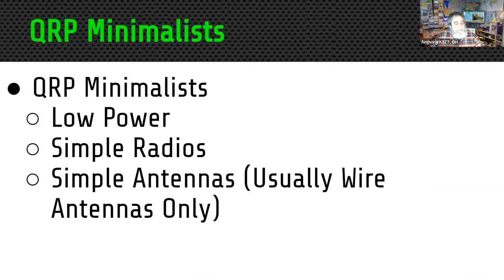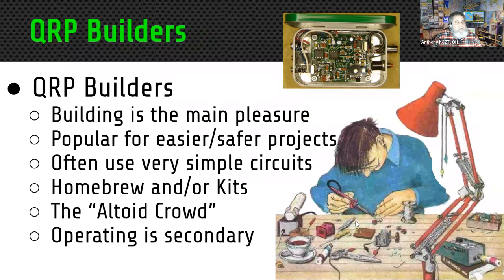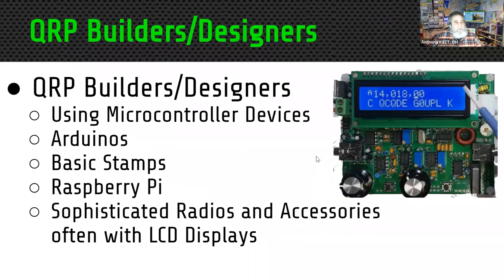QRP minimalists want low power, very simple radios, and very simple antennas. There was an article in early 80s QRP journals about the 'one-incher' — a radio built on a one-inch circuit board with one transistor output. Then there are the builders, whose main pleasure is building — they actually enjoy building more than operating. With QRP it's much easier and safer to build transmitters without high voltage. Many builders enjoy assembling kits; some build in Altoid mint cans, where operating is a secondary thought.